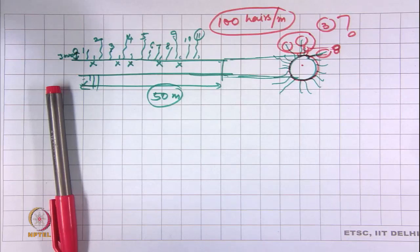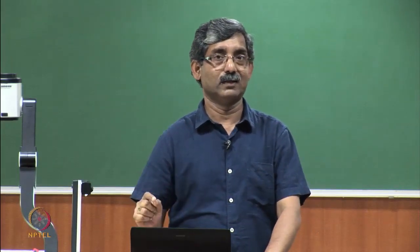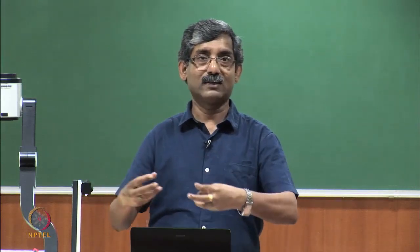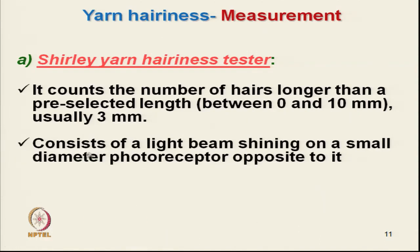In the Shirley hairiness tester, it measures hairs beyond a set length — typically more than 3 millimeters — and counts the number of hairs. There are 2 sets of rollers: one is a fixed roller set at 3 millimeters beyond the yarn surface. The other is variable, ranging from 0 to a maximum of 10 millimeters, and it counts the number of hairs at the selected distance.